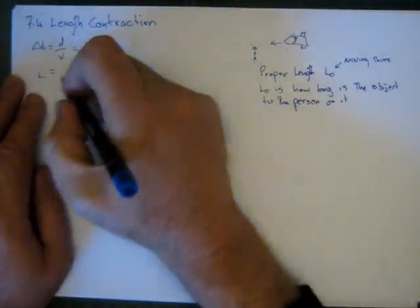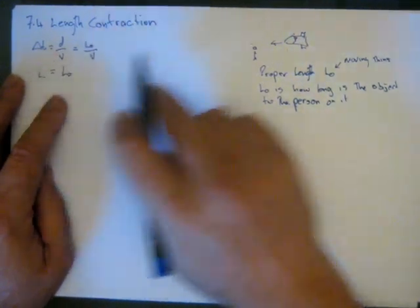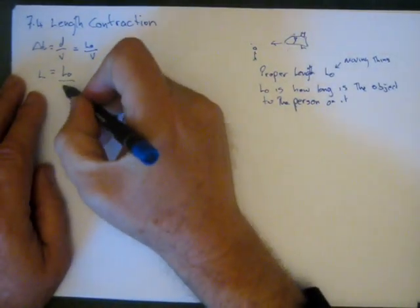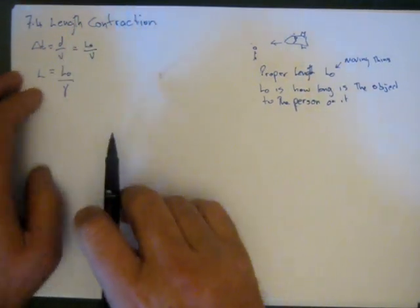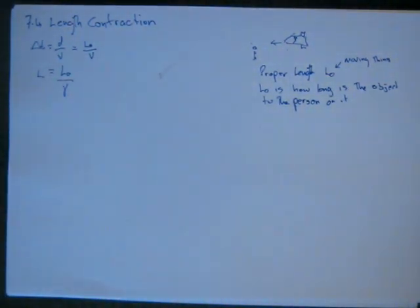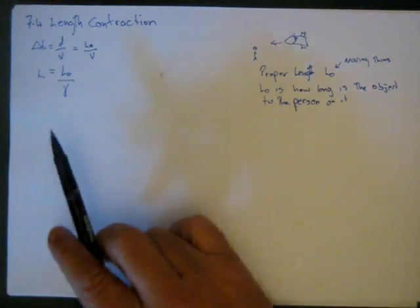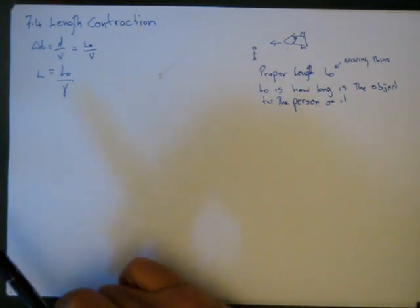What's L going to equal? L is going to equal the original length or the length of the object that's moving over gamma. There's a bit of a derivation on the notes if you want. So basically, with time dilation you multiply by gamma, with length you divide it by gamma.